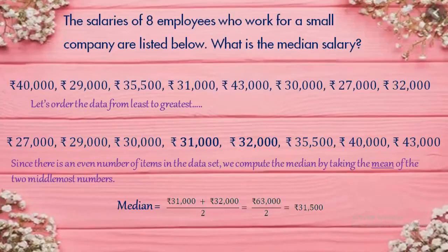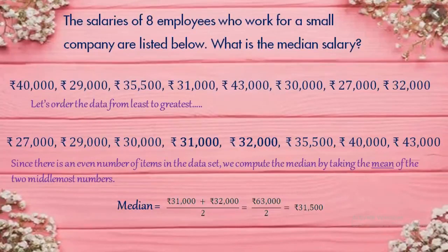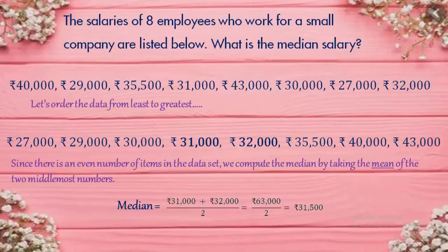For an even set of numbers, we find the median this way. In the previous question, we had an odd set of numbers, so we got a single middle number and took that as the median. Here, with eight employees — an even set — we got two middle values, and we find the mean of those two values to get the median.